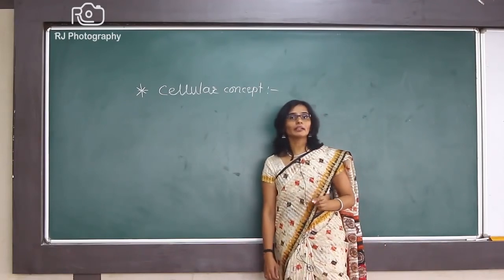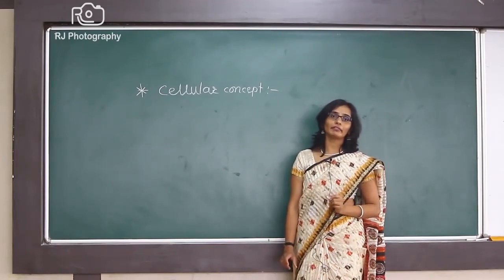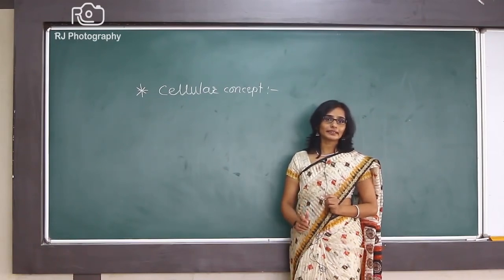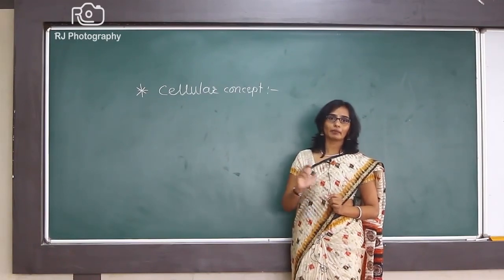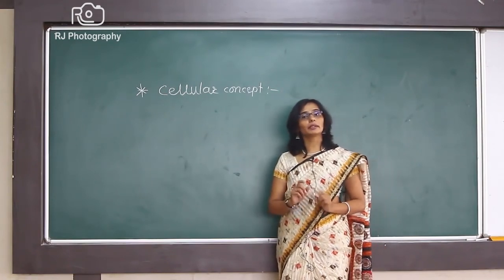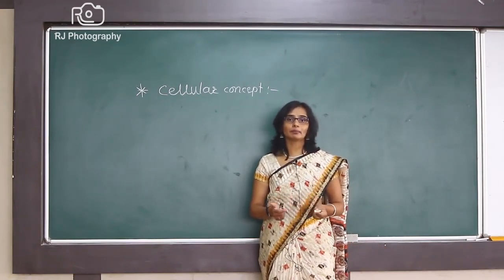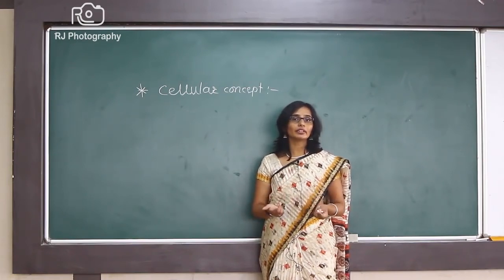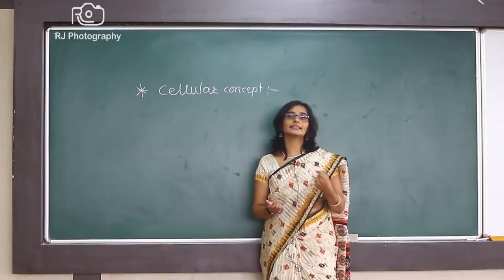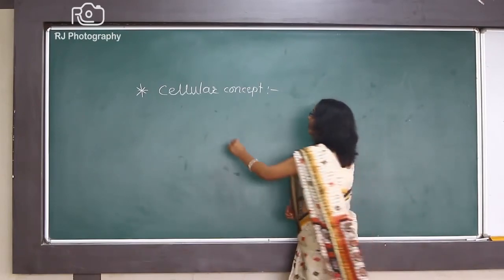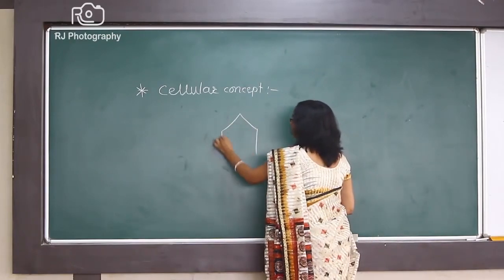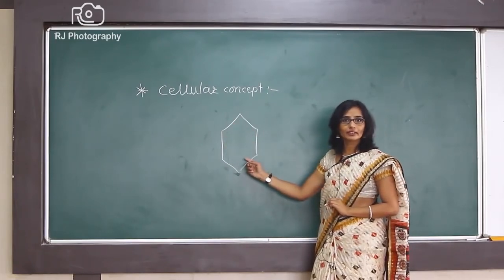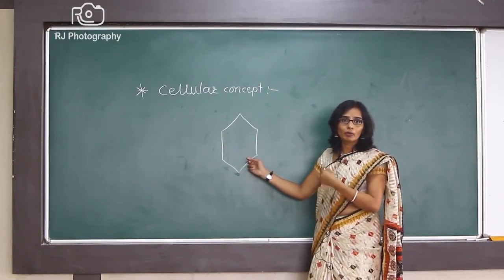Whenever we speak about mobile communication, a mobile device is a wireless device. So it is necessary that there is one base station which is going to cover all types of users. How much area that particular base station covers depends upon some calculation. For those calculations and for the theoretical version, we consider the area covered by the base station to be hexagonal. This hexagonal area is the geographical area which is going to cover the number of mobile users.